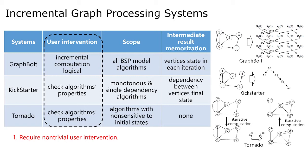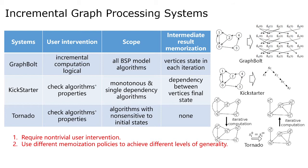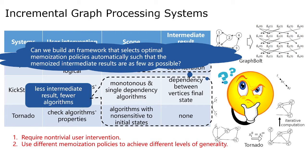Can we build an incrementalization framework that automatically converts a generic user-specified batch graph algorithm into an incremental counterpart? The second drawback is that these systems use different memorization policies and achieve different levels of generality. For example, Kickstart, GraphIn, and Tornado memorize fewer intermediate results, but they only focus on some specific algorithms. While in order to support more algorithms, GraphBot requires more intermediate results — the vertex states in each iteration. Can we build a framework that selects the optimal memorization policy automatically, such that the memorized intermediate results are as few as possible?